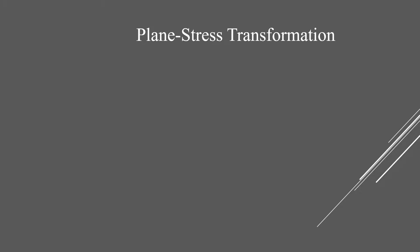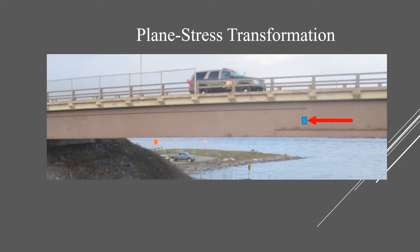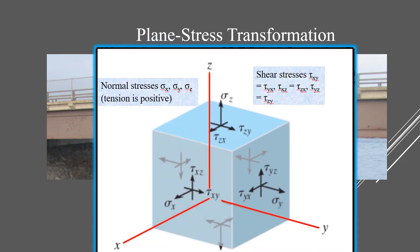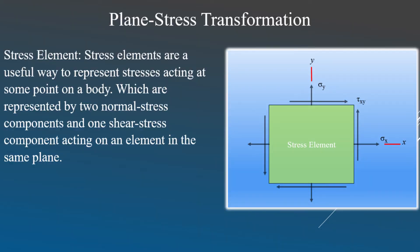If you take a look at this girder on a bridge, and if we take out a cubic volume element of material that represents the state of stress acting around the beam, the general state of stress at that point is characterized by six normal and six shear stress components. In real-world engineering practice, most loadings are coplanar, and so the stresses these loadings produce can be analyzed in a single plane or 2D dimension.